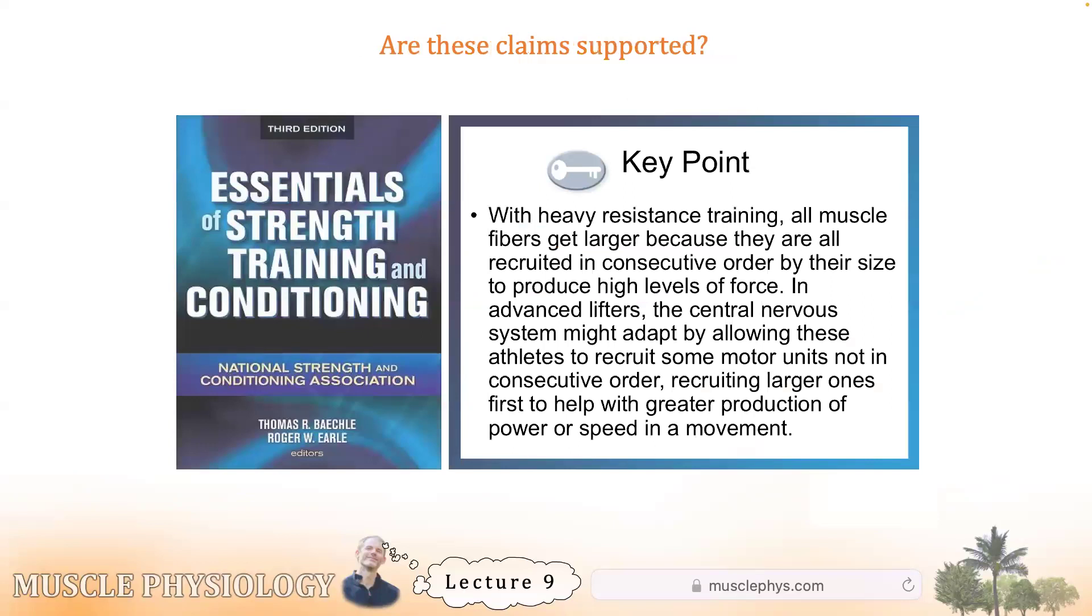So let's return to the book, their key point. Maybe this is true. It might be, it seems entirely reasonable that the order of recruitment isn't perfectly fixed, but the cited evidence for these claims that athletes are inverting size principle is uncompelling. And it becomes more interesting when we start investigating phenomena like post-activation potentiation, things like this, but we'll get to that in the next lecture.